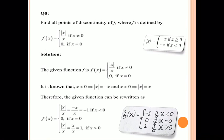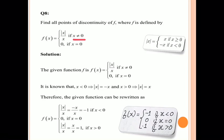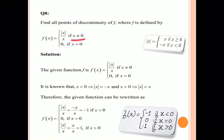Question number 8: find all points of discontinuity of f, where f is defined as f(x) = |x|/x if x is not equal to 0. x not equal to 0 means when x is less than 0 or greater than 0 — in both cases f(x) = |x|/x.